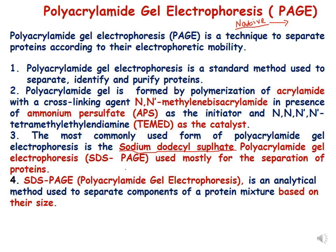Polyacrylamide gel is formed by polymerization of acrylamide and bisacrylamide in the presence of APS (ammonium persulfate) as the initiator, and TEMED (NNN-tetramethylethylenediamine) as catalyst. The most commonly used form of PAGE is SDS-PAGE, which is also called sodium dodecyl sulfate polyacrylamide gel electrophoresis, and it is used mostly for the separation of proteins.